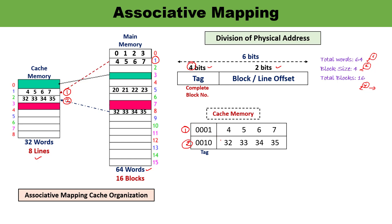In associative mapping, only tag matching is done. Cache line 1 has data words 4, 5, 6, 7, and cache line 2 has data words 32, 33 and the corresponding words. The tag for line 1 corresponds to binary 0001, and for line 2 the tag is 0010. Since each line holds 4 words, the word offsets in binary are: 00, 01, 10, and 11.